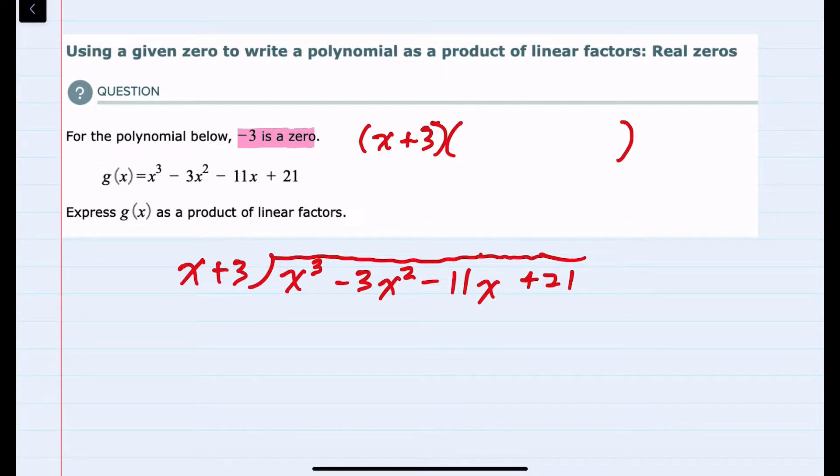For long division here, we didn't need any placeholders because we have each power after the highest power represented. And I start by looking at the leading terms. x³ divided by x gives me an x². So I know that my first value will be an x². And I can then multiply the x² times the x to get x³, and then multiply the x² by the 3 to get 3x².